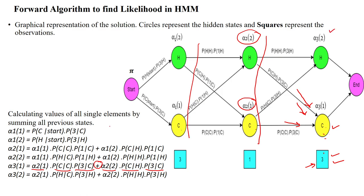Likewise, we calculate for alpha 3,2 (hot state). First possibility: alpha 2,1 multiplied by probability of hot given cold — current state is hot, previous state is cold — then probability of three given hot. Second possibility: alpha 2,2 multiplied by probability of hot given hot — current state hot, previous state hot — then probability of three given hot.